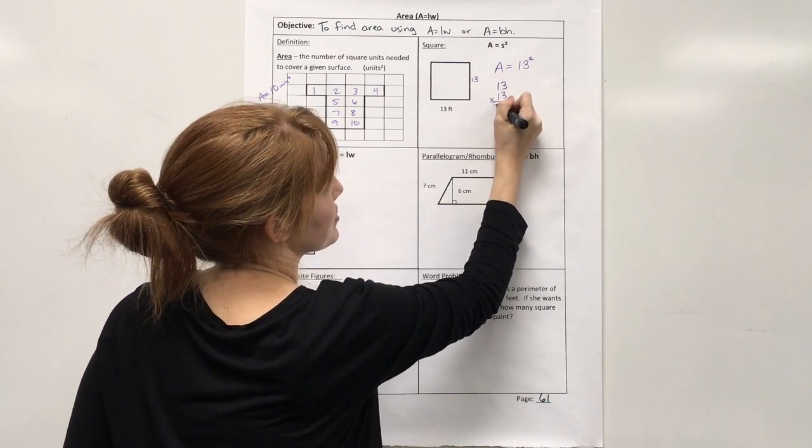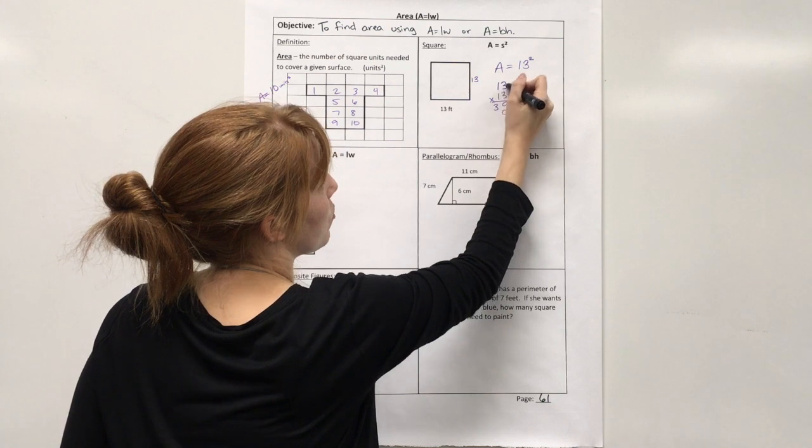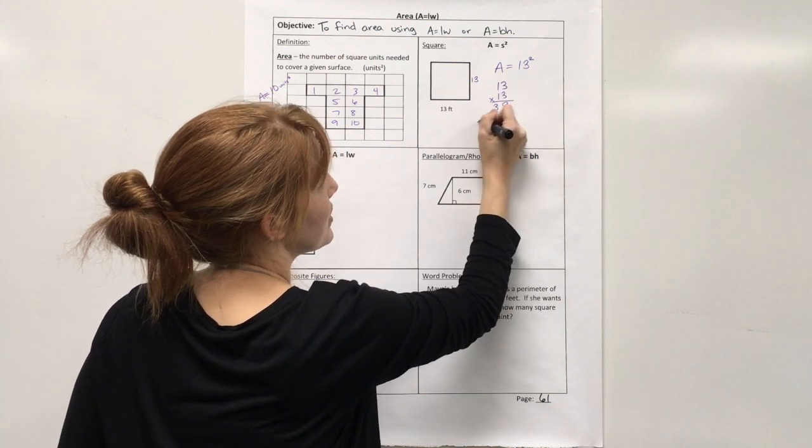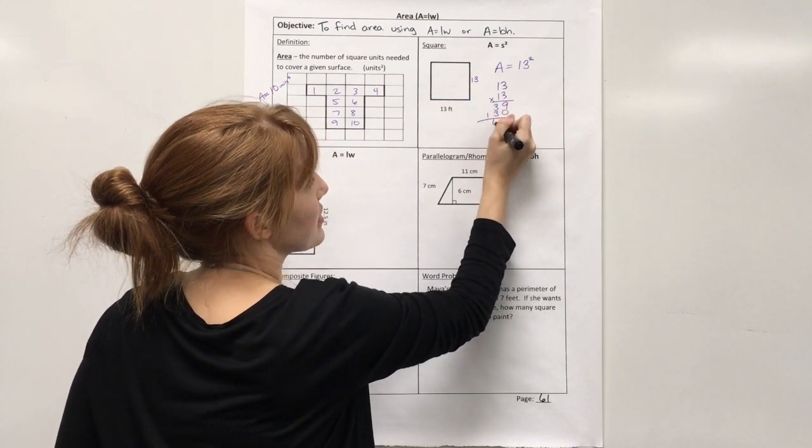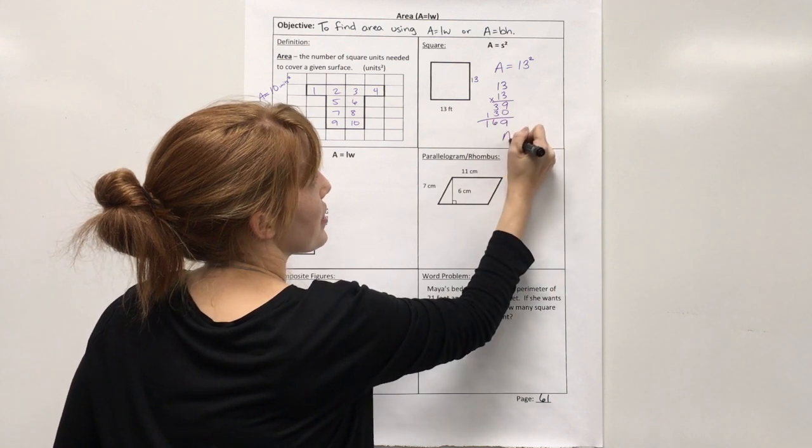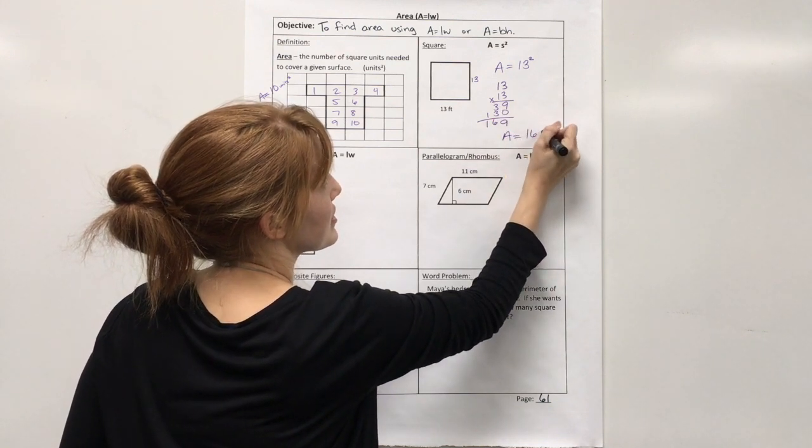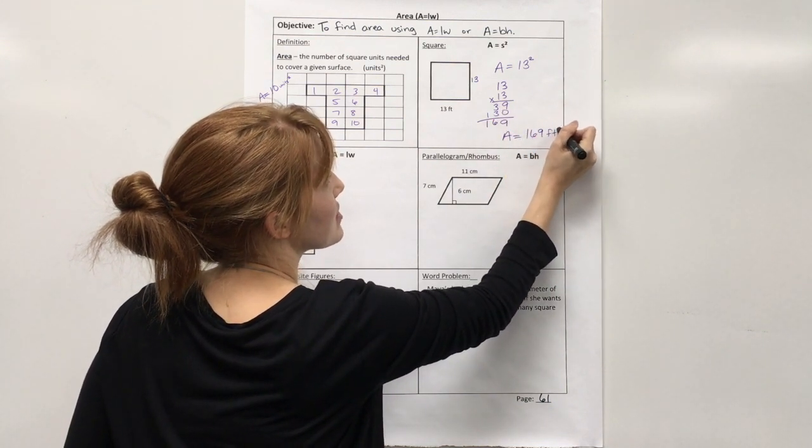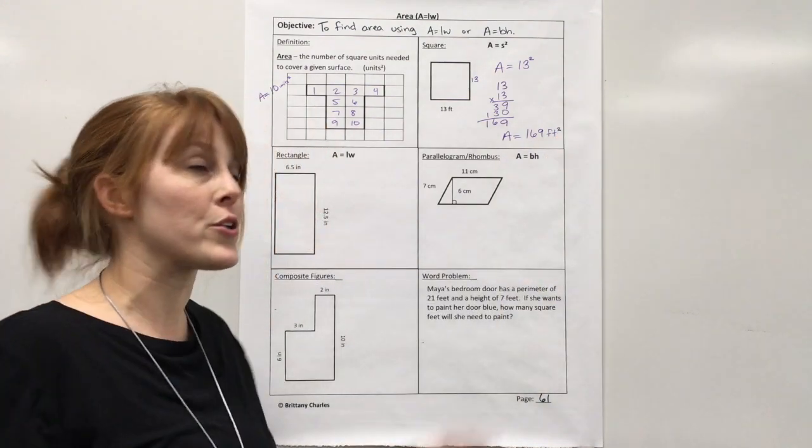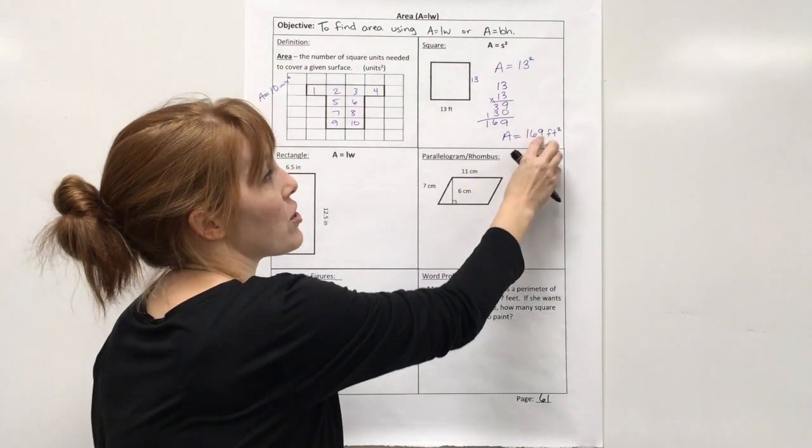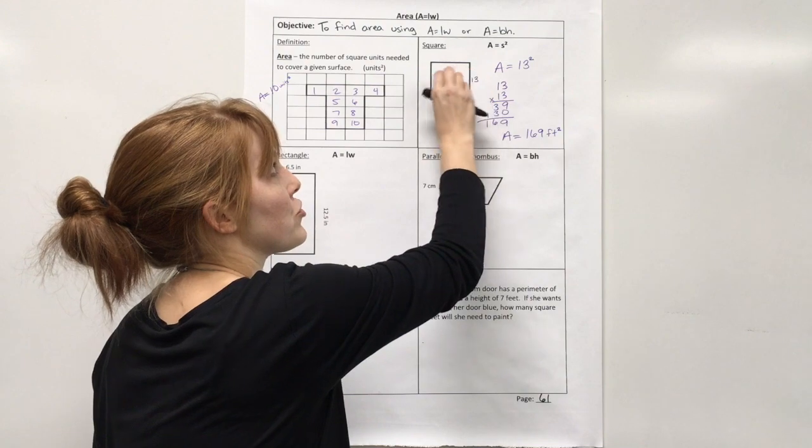3 times 3 is 9, 3 times 1 is 3, put to your placeholder. 1 times 3 is 3, 1 times 1 is 1, 9, 6, 1. So area equals 169 feet squared. Again, it's square units, because it's how many square feet would it take to cover the shape.